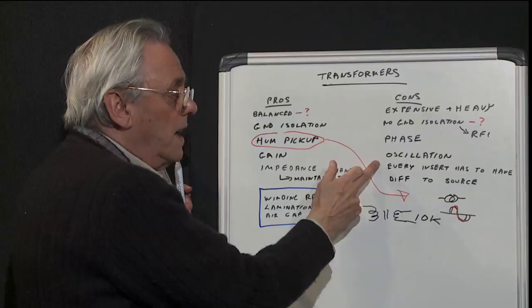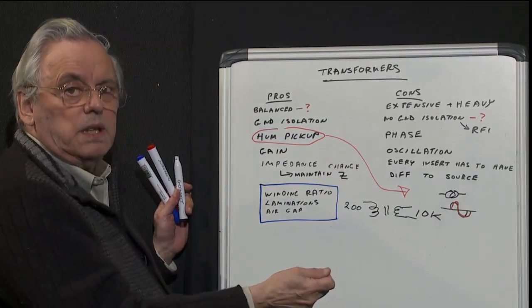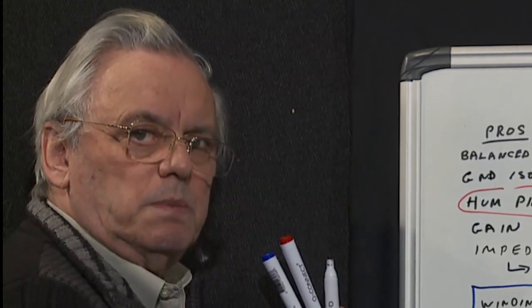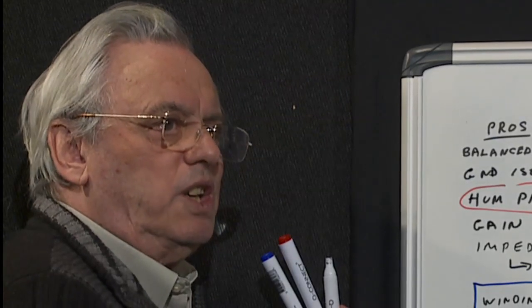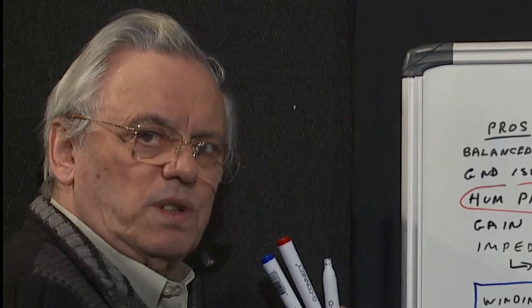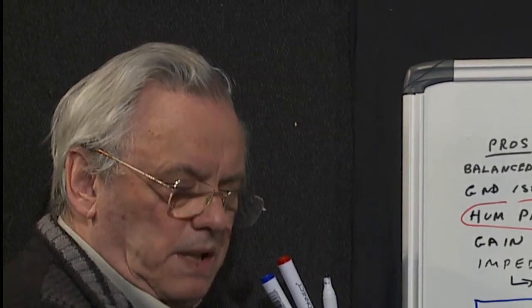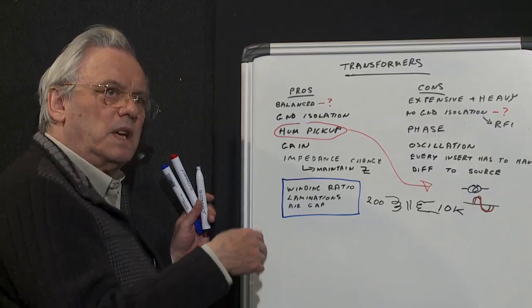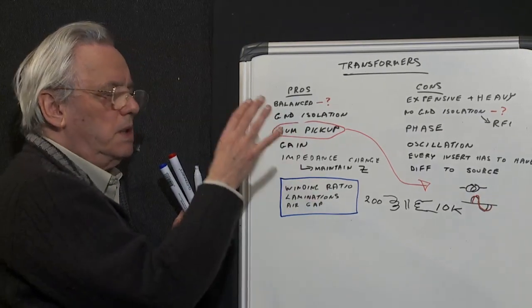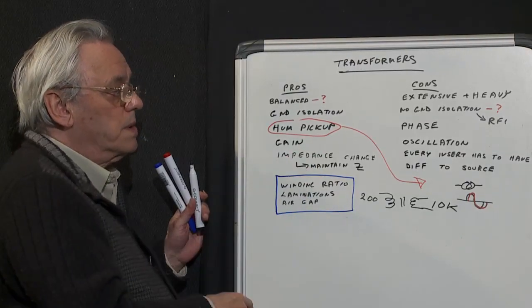Back to expensive and heavy: every insert point to maintain the integrity of your ground has to have a transformer coming out and a transformer going back in again. You might well be using a limiter or compressor, EQ, reverb, whatever, that doesn't have transformers in it. It has a balanced input from an op amp and balanced output from an op amp. To maintain your ground integrity between your desk and the external device, you need transformers.